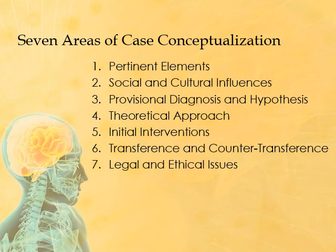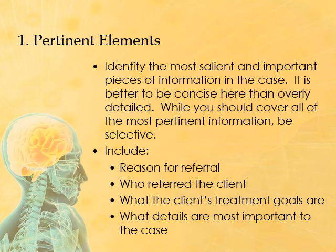The seven areas are: pertinent elements, social and cultural influences, provisional diagnosis and hypothesis, theoretical approach, initial interventions, transference and countertransference, and legal and ethical issues. Let's begin with pertinent elements. Pertinent elements involves identifying the most salient and important pieces of information in the case. It is better to be concise here than overly detailed. While you should cover all of the most pertinent information, be selective.